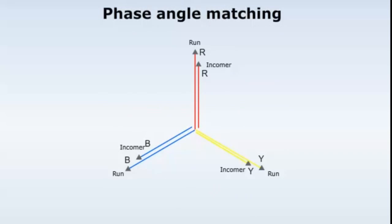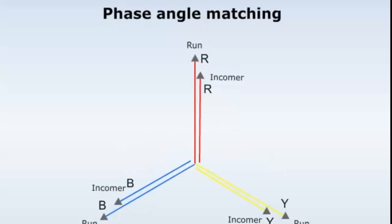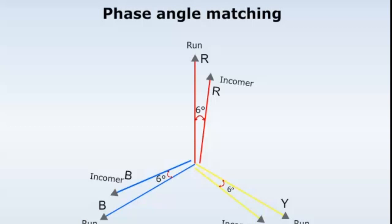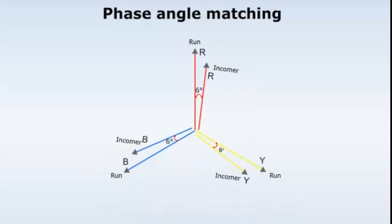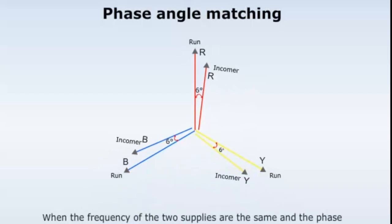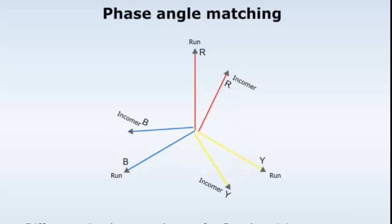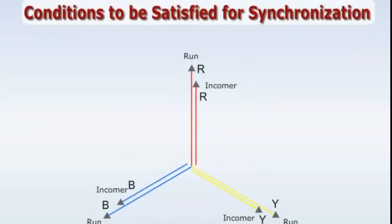The fourth condition is that the phase angle of the incoming alternator should match the phase angle of the running alternator. The phase angle between the two alternators should be within six degrees. This condition can be obtained only when the frequencies of the two supplies are the same and the phase sequences are also the same. A difference in phase angle between the running and incoming alternator at the moment of paralleling will produce synchronizing currents.